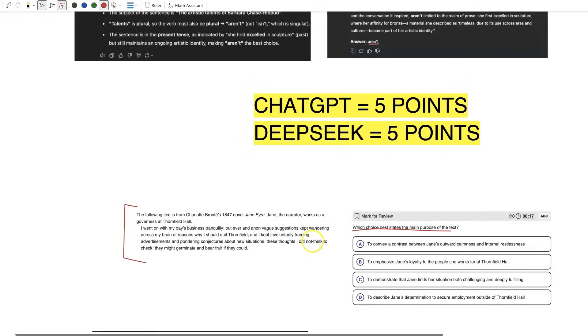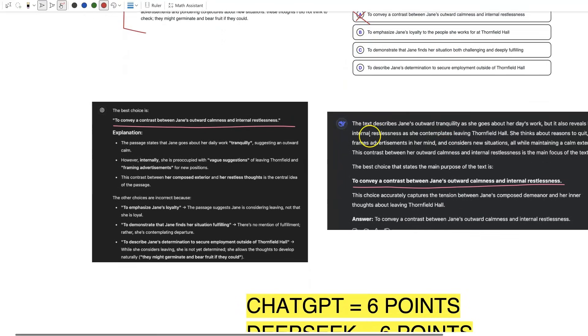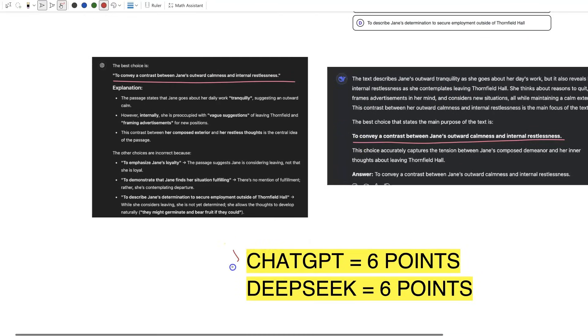Let's see what they say. They both choose 'to convey a contrast between Jane's outward calmness and internal restlessness,' which is the correct answer—A. And so now we come to a dilemma: they're both at six points and we're out of questions to ask them.